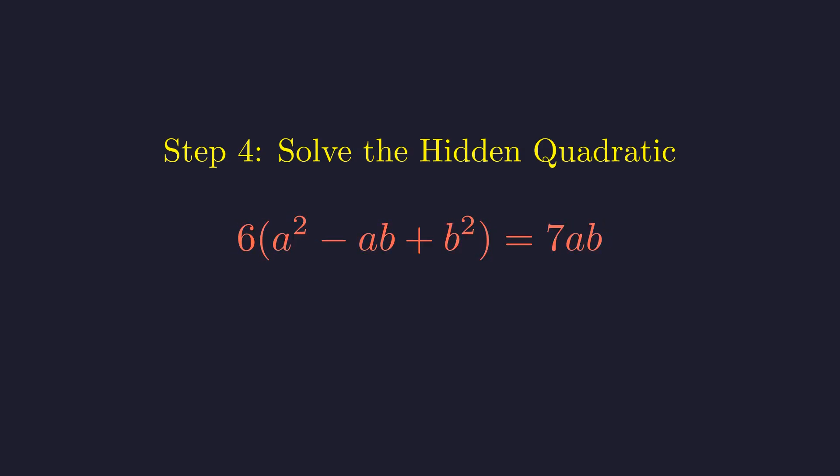Let's distribute that 6 on the left side. This gives us 6a² - 6ab + 6b². To get this into standard quadratic form, we need to move everything to one side. We subtract 7ab from both sides. Now we combine those middle terms.